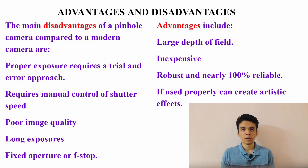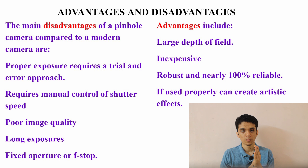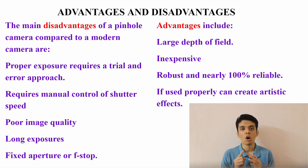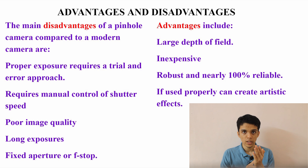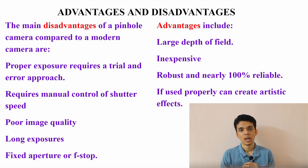Let's look at some disadvantages and advantages of camera obscura in comparison with the modern day camera. The main disadvantages are: proper exposure requires a trial and error approach, it requires manual control of shutter speed and is very difficult to control, poor image quality due to diffraction effects, long exposure which may lead to blurry images if the subject moves, and a fixed aperture or f-stop. The advantages include a large depth of field, inexpensive, robust and nearly 100% reliable, and if used properly it can create artistic effects.